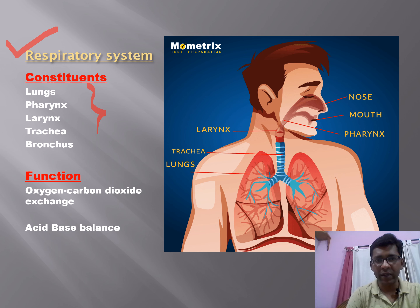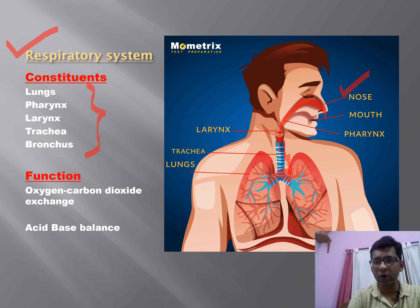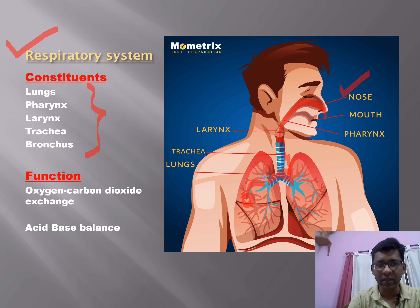The respiratory system is associated with respiration. Its constituents include the nose, nasal passage, nasopharynx, larynx, trachea, right and left bronchus, bronchioles, and alveoli. Starting from the nostrils, air travels through the nasal passage, nasopharynx, larynx, trachea, and then into the bronchi and bronchioles reaching the alveoli. Their function is oxygen and carbon dioxide exchange, and they also help in acid-base balance, similar to the kidney.